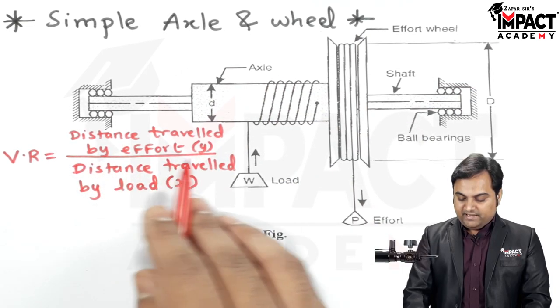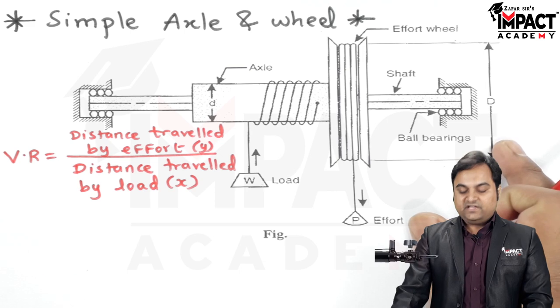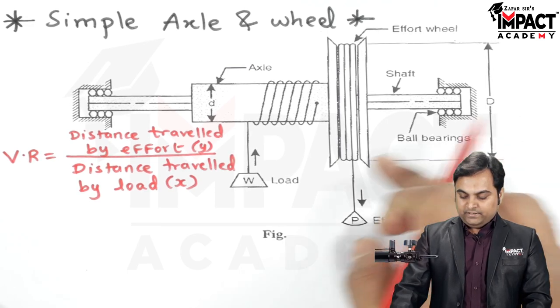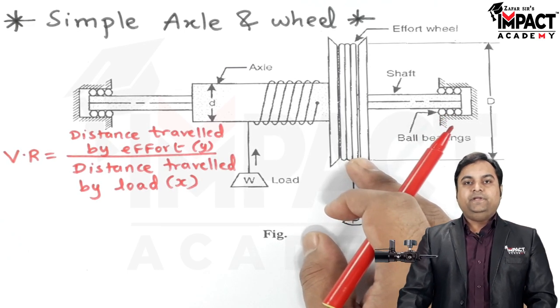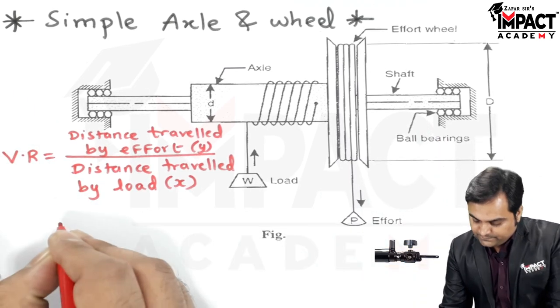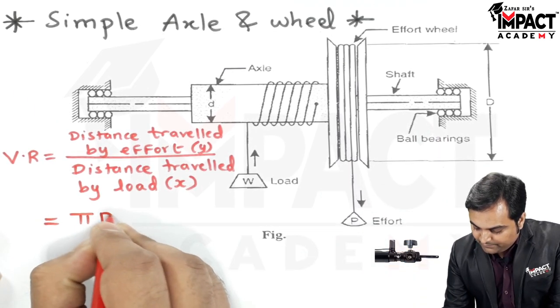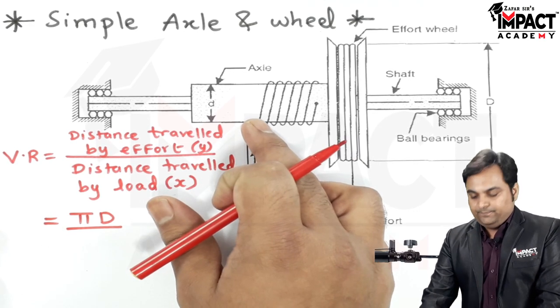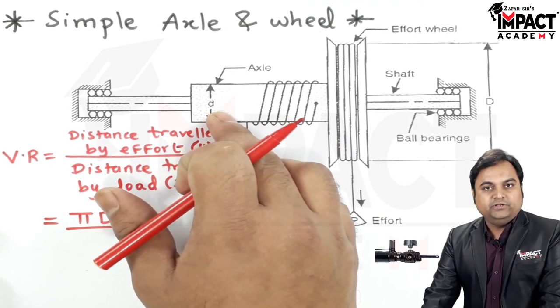The distance travelled by effort wheel having diameter capital D, the distance covered by it would be its corresponding to its circumference, so that is pi into capital D. The distance travelled by the load, here the diameter is small d.